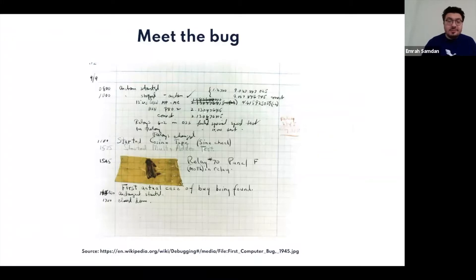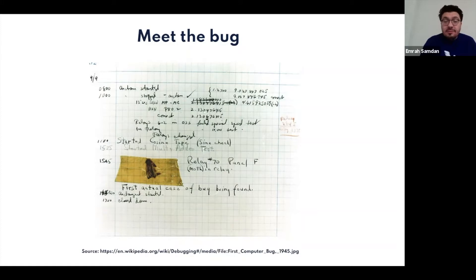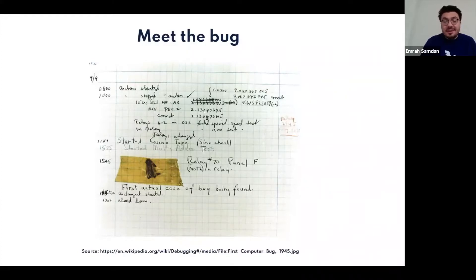I made research into why we call it 'debugging' rather than 'erroring' our applications. The name actually first originated from Admiral Hopper, who was writing code on tape but there was a moth — an insect — on the tape which prevented the program from running. So she had to debug, meaning take the moth out of the tape, to make the application run properly. For this reason, we call it debugging.